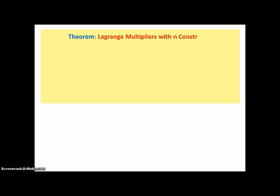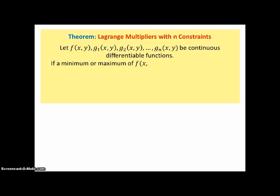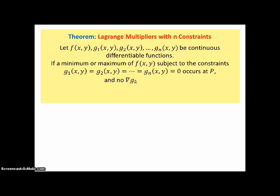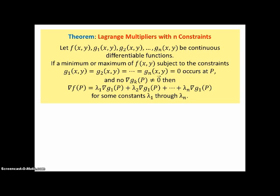There is also an extended theorem — Lagrange multipliers with n constraints. You have a function to maximize, with n constraint functions g, all continuous and differentiable. If a minimum or maximum of f subject to n constraints all set equal to zero occurs at point p, and none of the constraint gradients are the null vector, then the gradient of f at p equals the sum of constraint gradients each multiplied by a different lambda. With many constraints in high-dimensional space, the algebra can get ridiculously difficult — that's where computers come in.